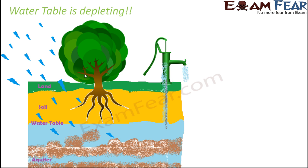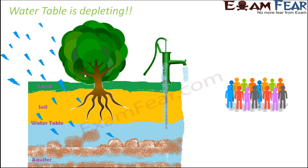This depletion of the water table can occur due to a variety of reasons. It can happen when usage becomes more than supply. Water is used by many living organisms, but specifically when depletion is concerned, human beings are one of the major causes. When usage by humans exceeds supply, the water table starts depleting.